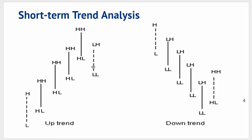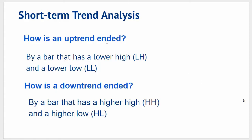Moving to the last bar here, we have a lower high compared to the previous bar and a lower low compared to the previous bar. We therefore have a downtrend in place by definition — we have a change of trend here. By definition an uptrend is ended by a bar that has a lower high and a lower low, and a downtrend is ended by a bar that has a higher high and a higher low. We need the opposite configuration of highs and lows to what was previously in place.